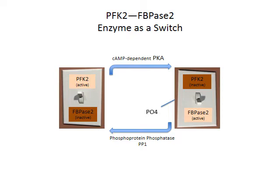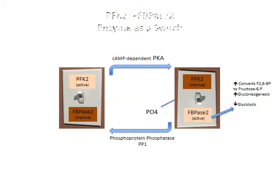On the flip side, in the PO4 conformational state, FBPase-2 is active and PFK2 is inactive. FBPase-2, the fructose-2,6-bisphosphatase, converts fructose-2,6-bisphosphate to fructose-6-phosphate — a movement up the gluconeogenesis pathway — meaning glycolysis is suppressed and glucose is eventually created.